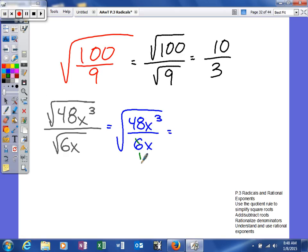Well, 6 will go into itself once, we'll go into 48 eight times. We have 1x on the bottom and 3 on the top. So we can take 1x from each. So what we're going to end up is the square root of 8x squared.